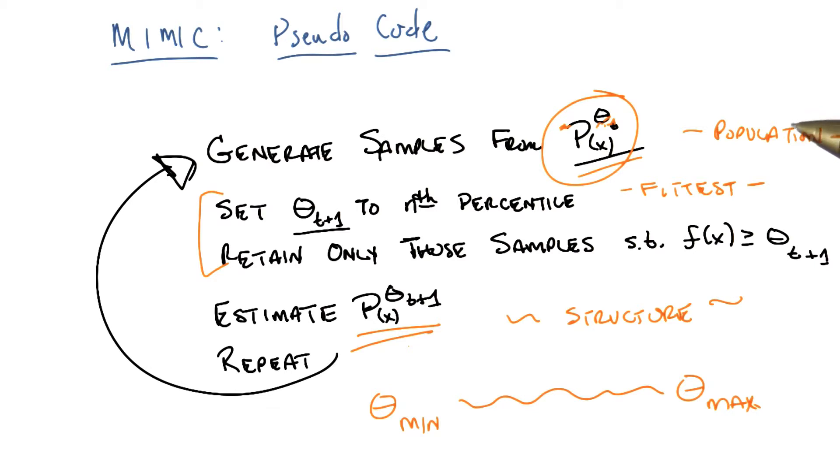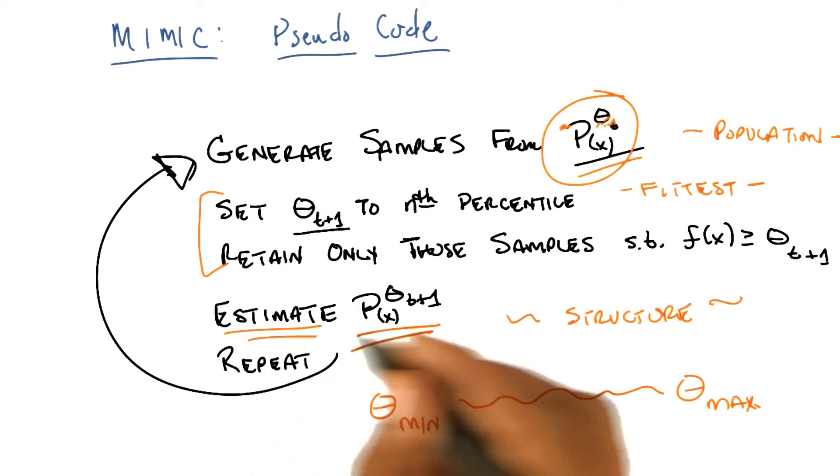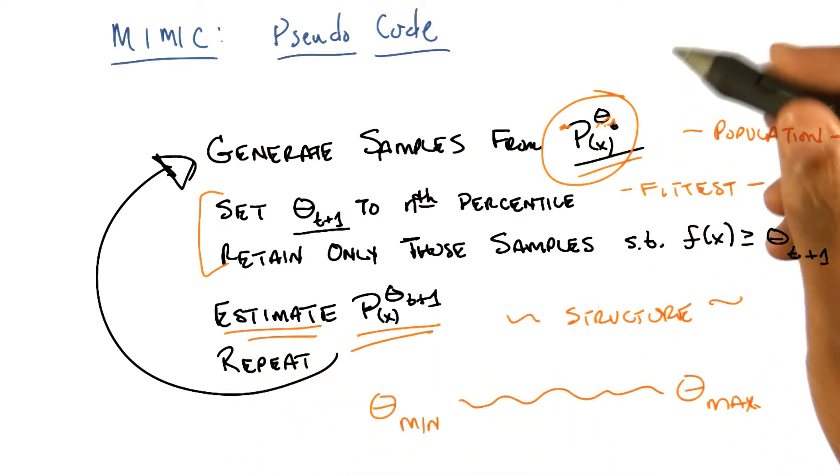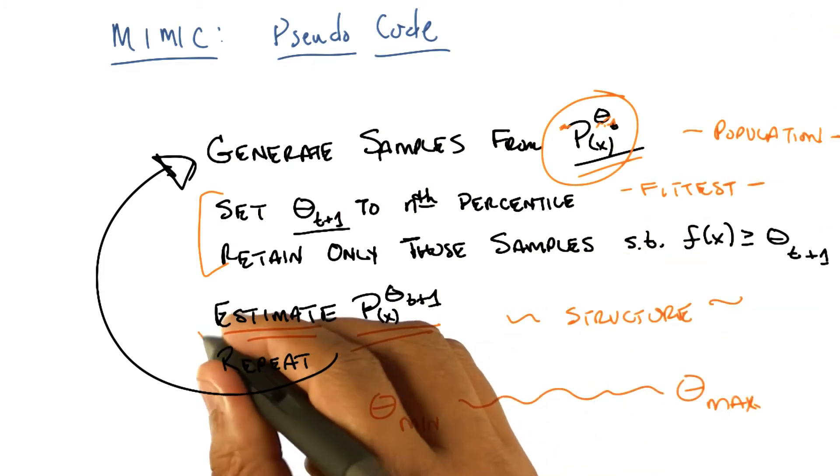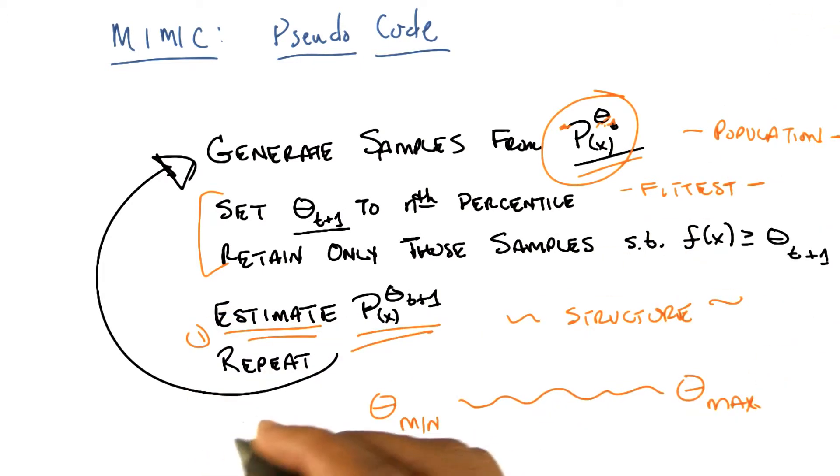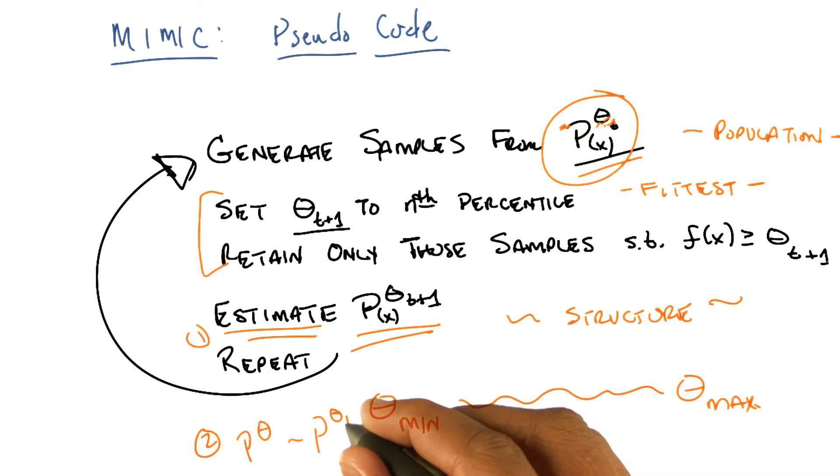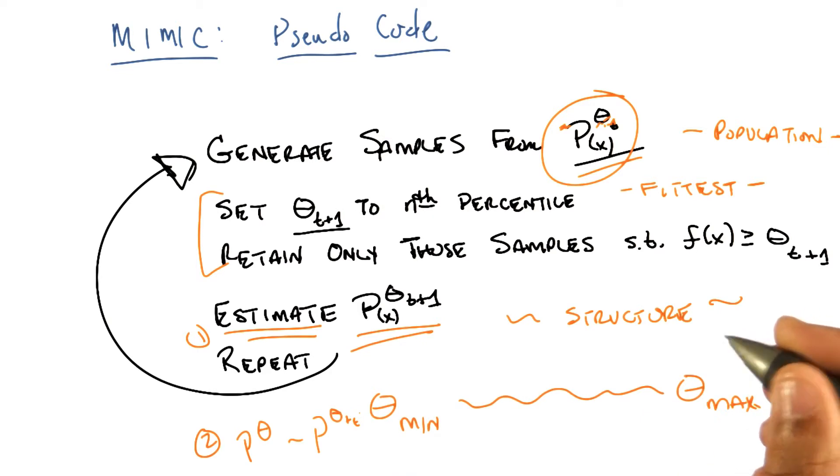So this should work, or at least it should match your intuition that would work, if there are two things that are true. The first is that we can actually do this estimate. Yeah, that's the part that scares me. Sure. Well, given a finite set of data, can we estimate a probability distribution? So that's the first thing that sort of had better be true.